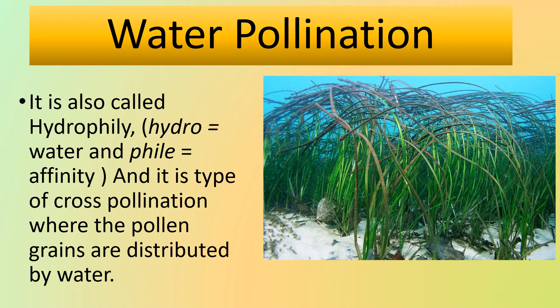The next type is hydrophily, where 'hydro' means water and 'phila' means affinity. It is a type of cross-pollination where the pollen grains are distributed by water. Here we have a picture of Zostera, or eelgrass, which undergoes water pollination.